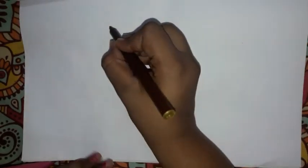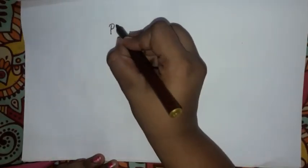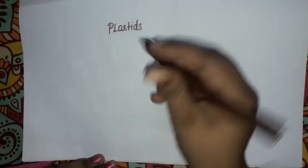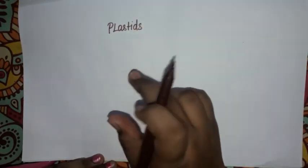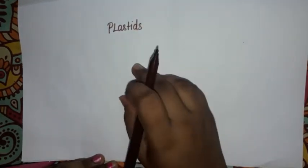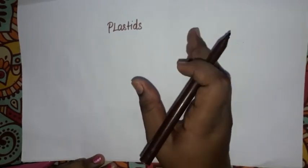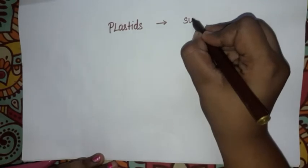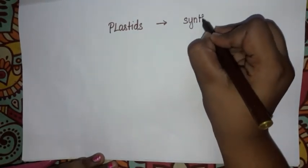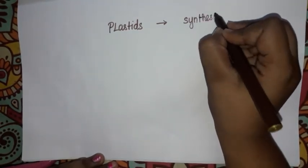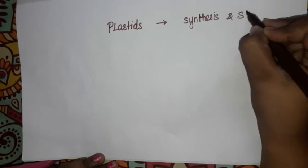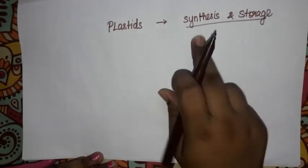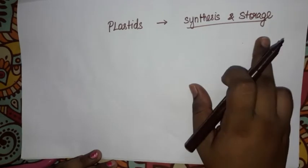Hi students, we need to learn about plastids. What are plastids? They are double membrane-bound organelles found in plants and algae. Their functions are synthesis and storage.